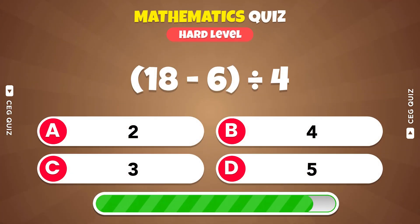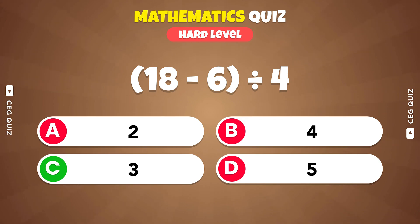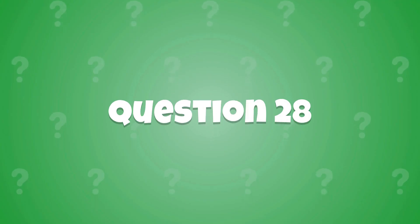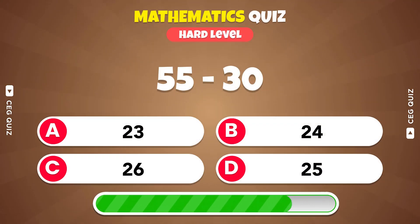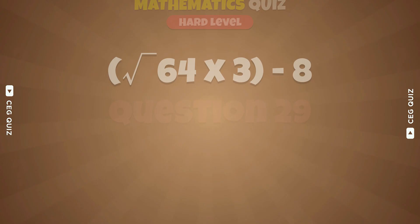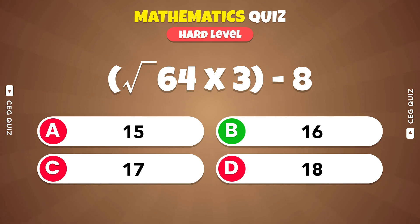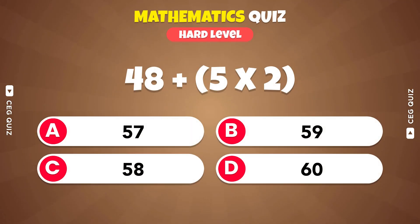What is 18 minus 6 divided by 4? That's 3. How much is 55 minus 30? 25. Solve the square root of 64 times 3 minus 8. The answer is 16. What is 48 plus 5 times 2?